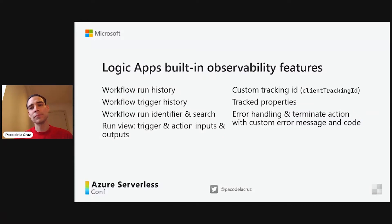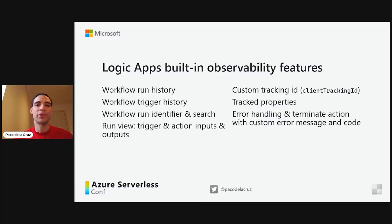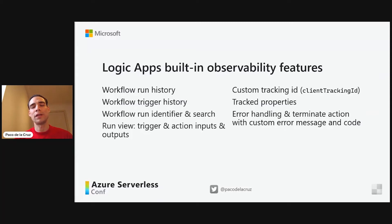On top of that, you can track some custom metadata. For example, for every instance you can store a custom tracking ID — like if you were processing purchase orders you could store the PO number, or if you're processing invoices you can store the invoice number. That allows you to search for the instance of a workflow that processes that particular PO or invoice. You can also track properties. The difference between the custom tracking ID and track properties is that the custom tracking ID is tracked at the trigger level, whereas track properties can be tracked at any action and can track action inputs and outputs for that very action.